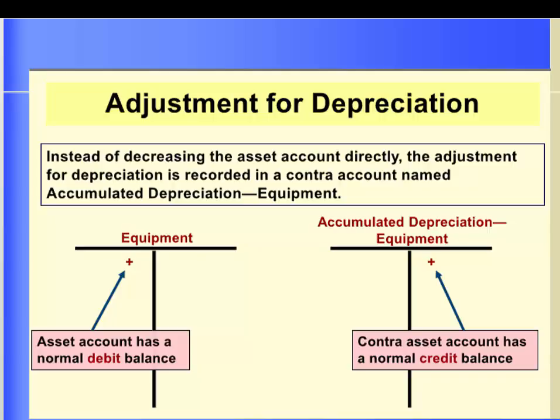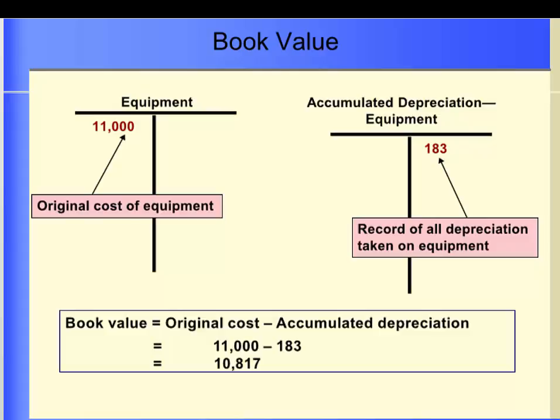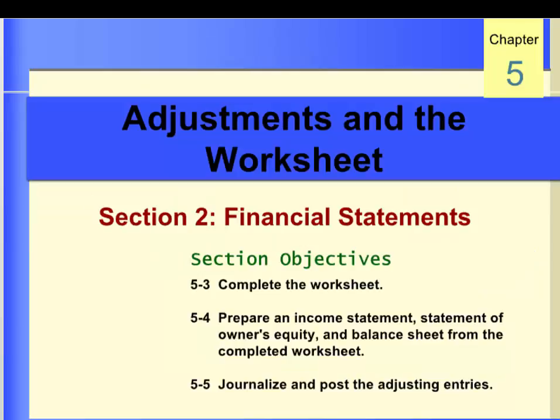In making the $183 depreciation adjustment, we do not credit the asset account directly. Instead, we credit a contra-asset account called accumulated depreciation equipment. This account will accumulate the amount of the asset's cost that has been expensed, or depreciated, over the life of the asset. Letter C is written next to the debit and credit of the journal entry in the worksheet that shows the depreciation adjustment. When all of the adjustments have been completed, foot the columns to ensure that they balance. Book value shows what the asset's net cost is on the books of the business — by net cost, we mean its original cost less the depreciation taken to date. It is the unexpensed portion of the original cost. The book value of our equipment, right after the first depreciation adjustment, is $11,000 minus $183, which equals $10,817.